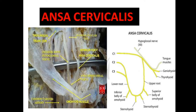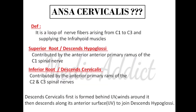Hello and welcome to today's episode of Monday's Mnemonic. In this video we'll be going through an important topic which is most commonly asked in university exams as well as in the USMLE — that is ansa cervicalis. First of all, what is the definition of ansa cervicalis? It is a loop of nerve fibers arising from C1 to C3 and supplying the infrahyoid muscles. Basically it is a part of the cervical plexus comprising C1 to C3 nerve fibers.